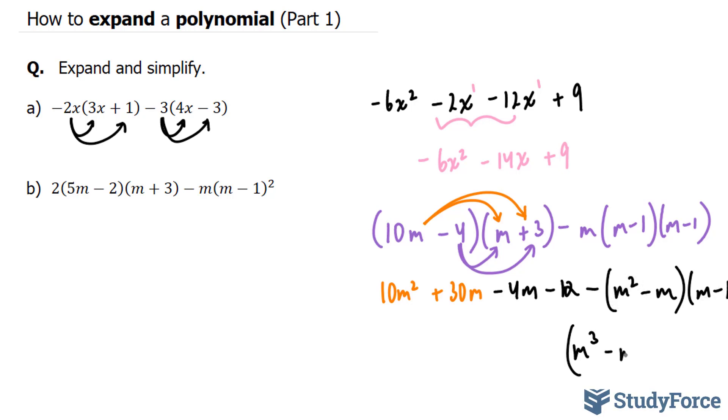m squared times negative 1 is negative m squared. These two multiplied give us negative m squared. And negative m times negative 1 gives us positive m.